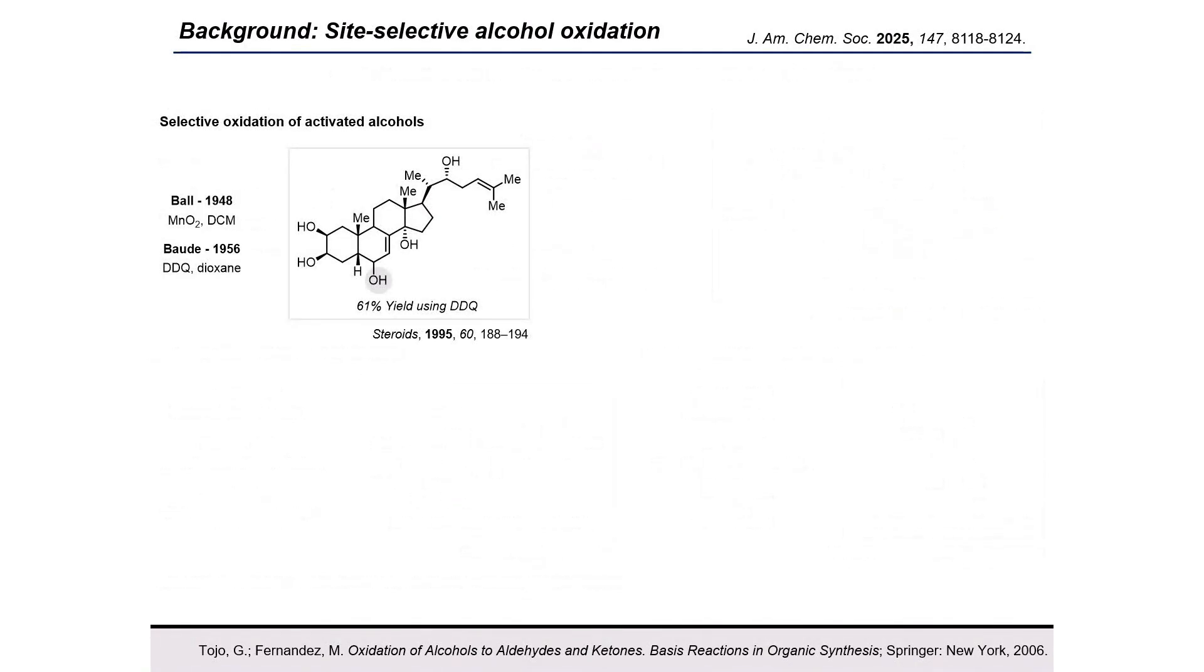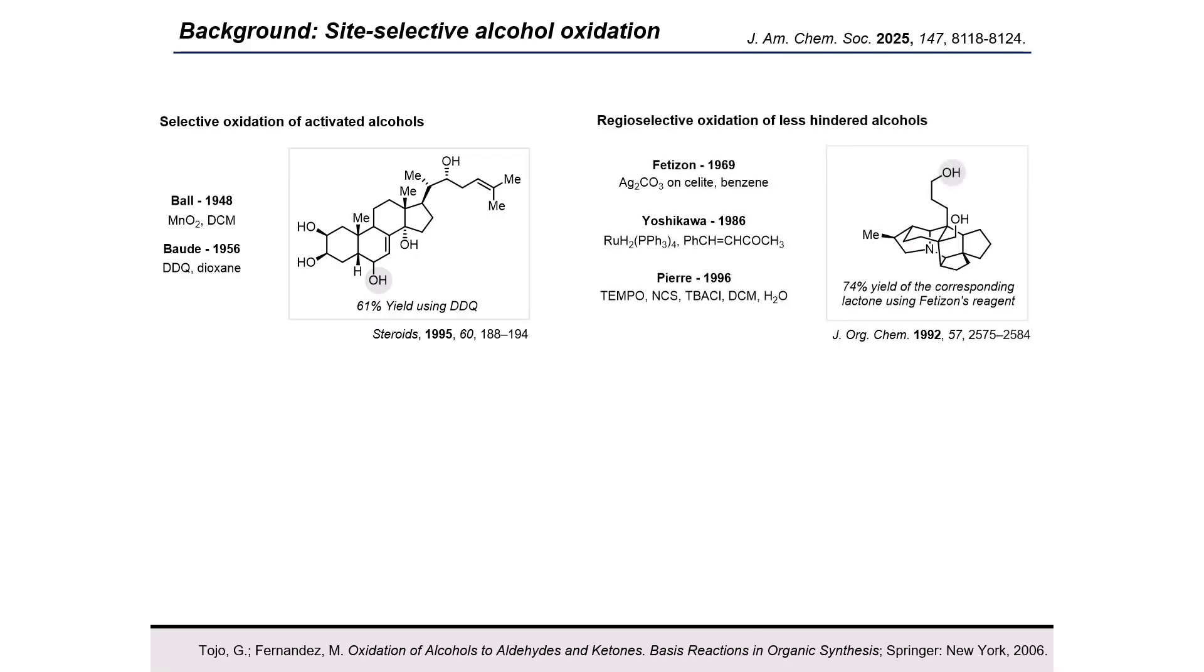Similarly, allylic or benzylic alcohols can be oxidized in the presence of unactivated alcohols by pathways which generate radical or cationic intermediates that are stabilized by the pi systems. And finally, alcohols with the same degree of substitution, so in this example two primary alcohols, can be sterically distinguished to achieve some degree of selectivity for oxidation of the more accessible less hindered site.